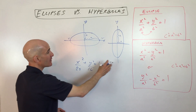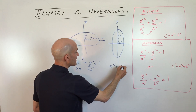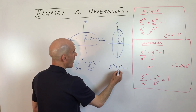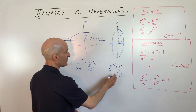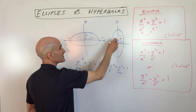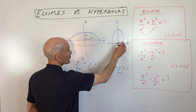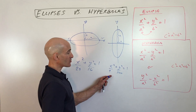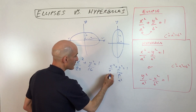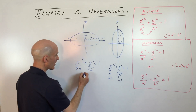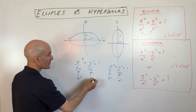The number underneath the y tells you you're going in the y direction, plus or minus four. Another example: x squared over 9 plus y squared over 100 equals one. This tells you you're going up 10 and down 10 in the y direction, and only three left or right in the x direction. The larger number is a squared, and the smaller number is b squared.